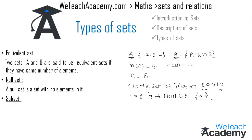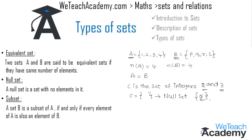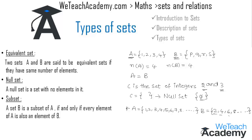A set B is called a subset of A if and only if every element of B is also an element of A. For example, let A = {1, 2, 3, 4, 5, 6, 7, 8, ...} and B = {2, 4, 6, 8, ...}. Since all elements of B belong to set A, we say that B is a subset of A.